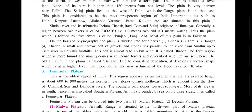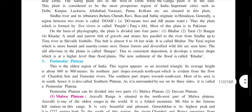The plain is very fertile due to alluvial sediment, and many cities have developed here such as Delhi, Kanpur, Lucknow, and Varanasi. The Sindhu (Indus) River and its tributaries — Jhelum, Chenab, and Ravi — originate from the Himalayas. Punjab gets its name from 'Panj' meaning five, as five rivers form the plain there.